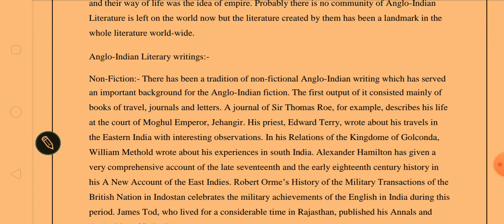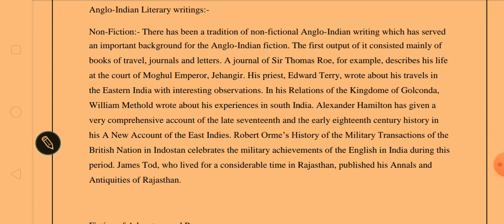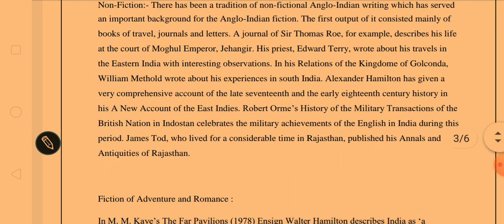There has been a tradition of non-fictional Anglo-Indian writing which served as an important background for Anglo-Indian fiction. The first output consisted mainly of books of travel, journals, and letters. A journal of Sir Thomas Rowe describes his life at the court of Mughal emperor Jahangir. Edward Terry wrote about his travels in eastern India. William Metholt wrote about his experiences in South India. Alexander Hamilton gave a comprehensive account in A New Account of East Indies, Robert Homme's History of Military Transactions celebrates English military achievements, and James Toad published Annals and Antiquities of Rajasthan.